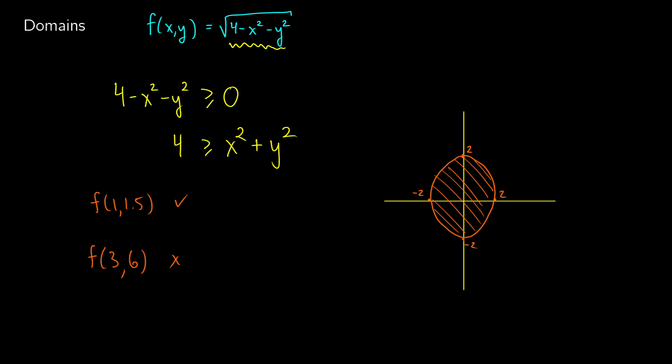So this was a quick video, but if you can do functions in one variable, you can do functions in two variables. It's just a matter of plugging in two values instead of one, and realizing that your domains exist in two-dimensional space rather than on a one-dimensional number line. If you have any questions, you know what to do.